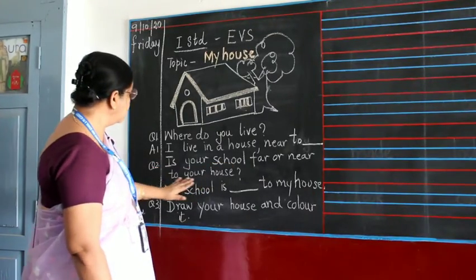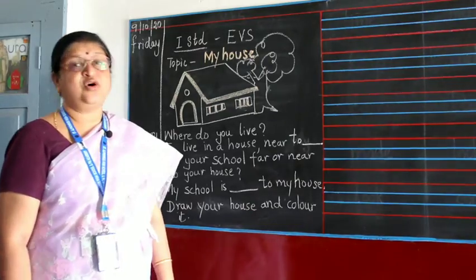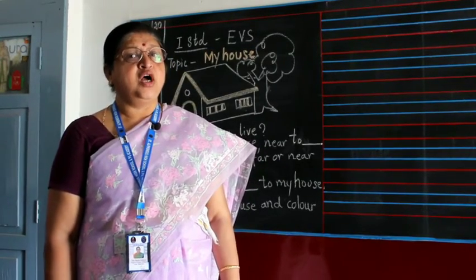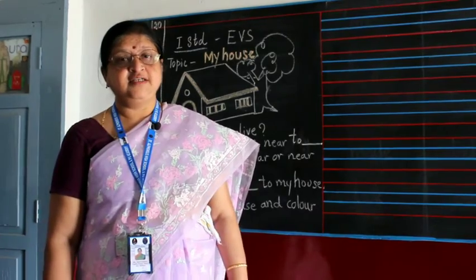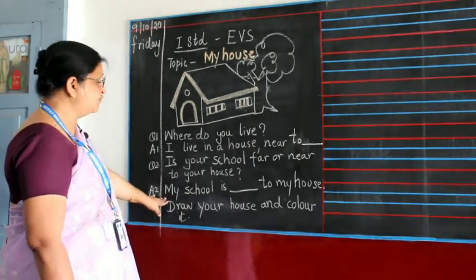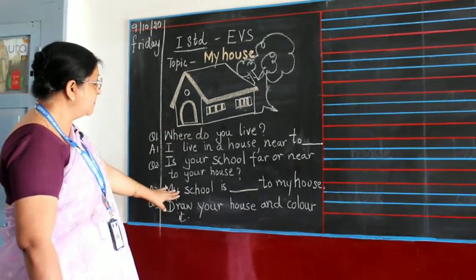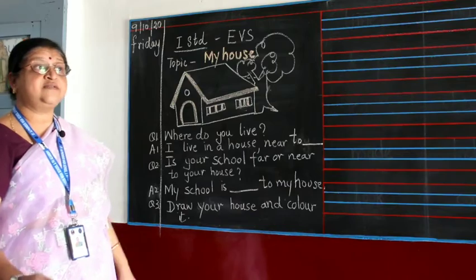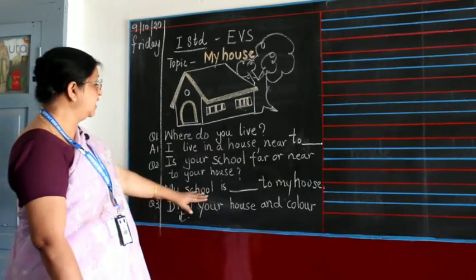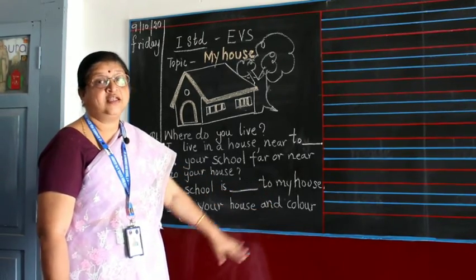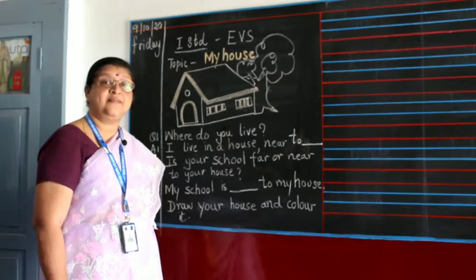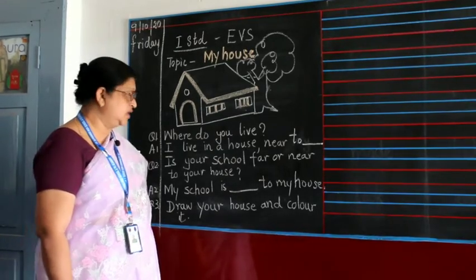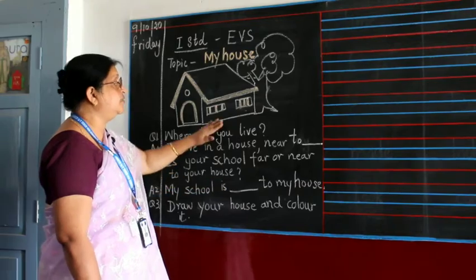The next question is: is your school far or near to your house? You all come to school — you love St. Alphonsus, isn't it? If your house is close to school, you write: my school is near to my house, and you come by walk. If it is far, you write: my school is far from my house, and you come by auto, bike, or some other mode of transport.